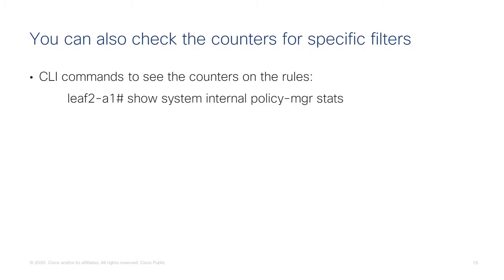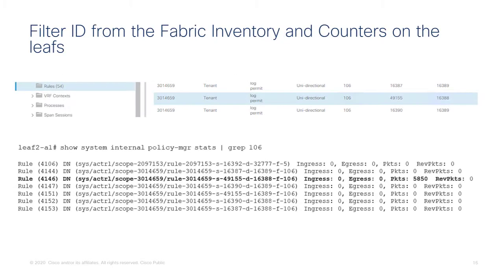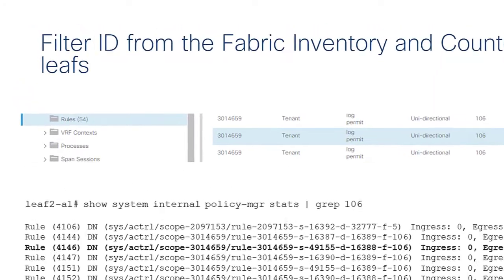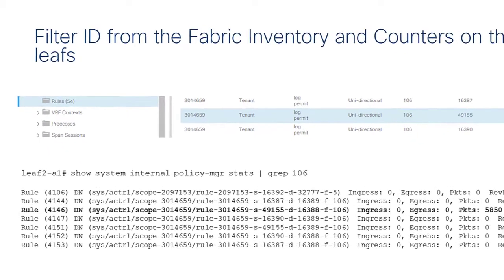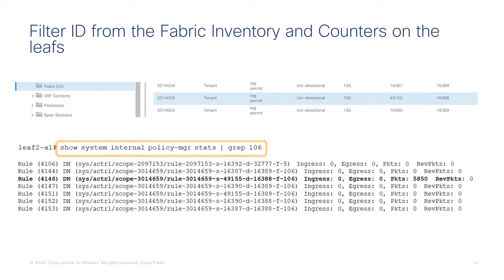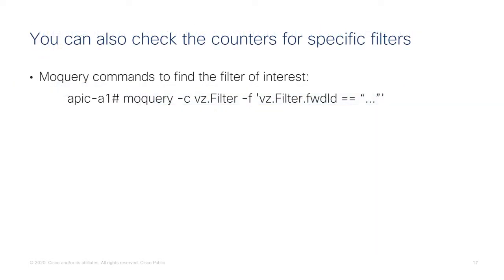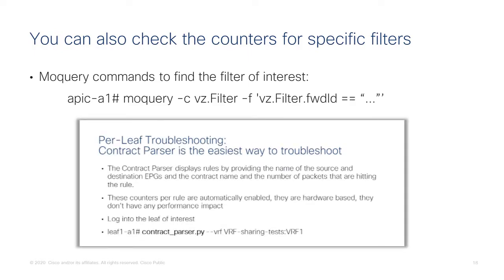You can also check hardware statistics with the dedicated command: show system internal policy manager stats. This shows the exact count of packets. However, it is more involved — it does not show the name of the contract or EPGs. You need to find the rule number by going to the leaf in the fabric inventory. So in summary, these are the per-leaf commands to check the stats. If you want to make your life easier, just use the contract parser command — that's the easiest way to look at the policy cam programming on the leaf.